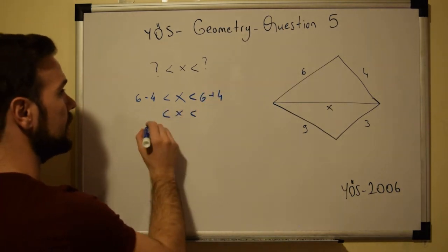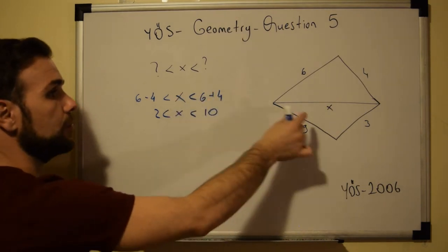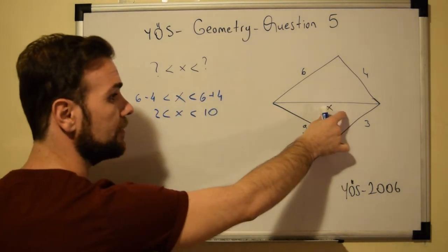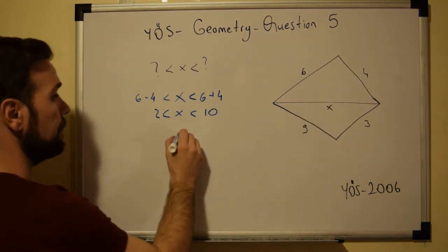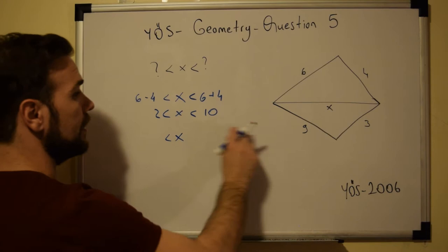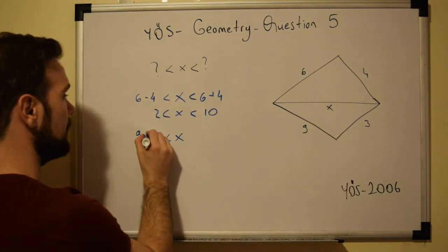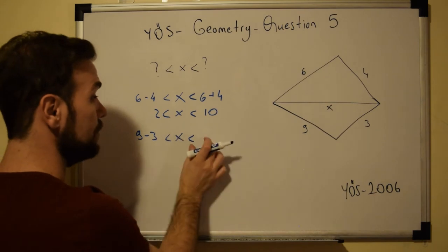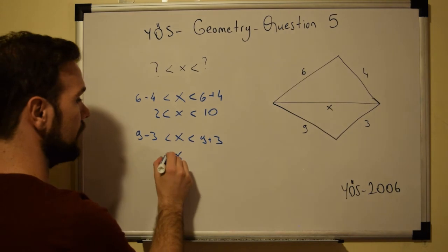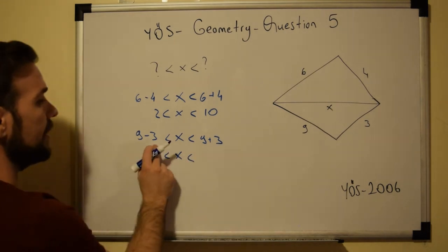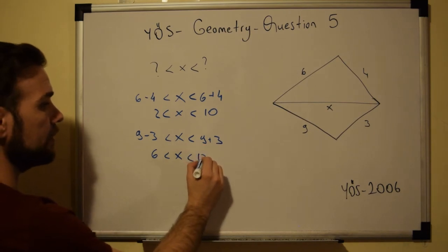We apply the same logic to the lower triangle. The value of X must be greater than 9 minus 3, and less than 9 plus 3. So X is between 6 and 12.